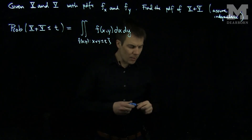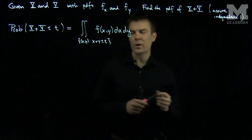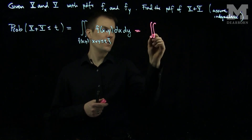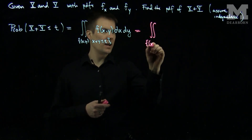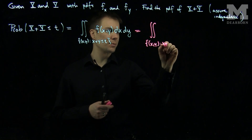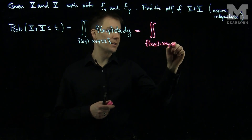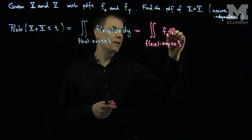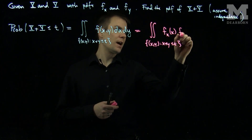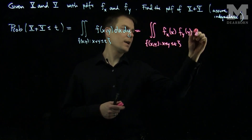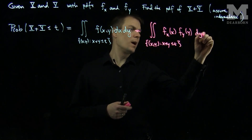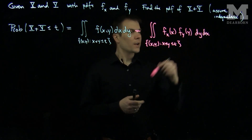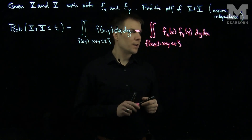Now by independence we know that the joint PDF factors, so this will be equal to the double integral over the set of all x and y such that x plus y is less than or equal to t, of fx of x times fy of y, dy dx — or we can do dx dy. Either way will work.